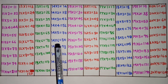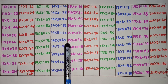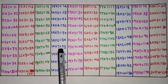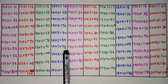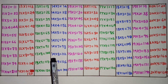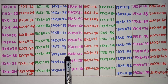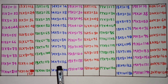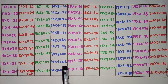14 6s are 84, 14 7s are 98, 14 8s are 112, 14 9s are 126, 14 10s are 140.